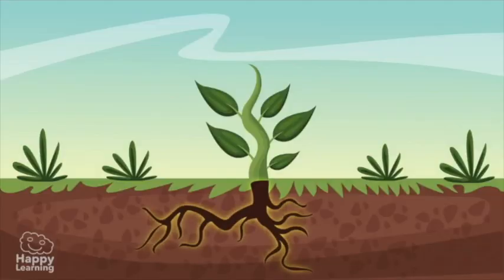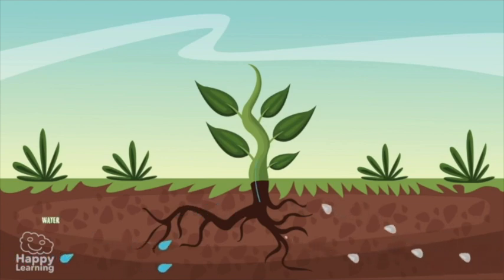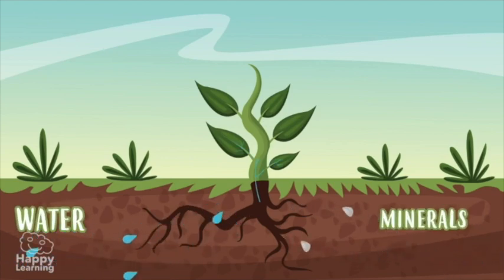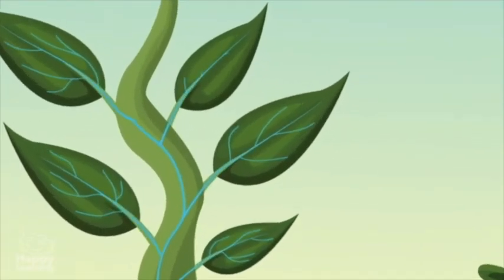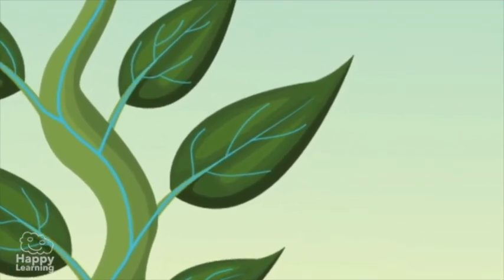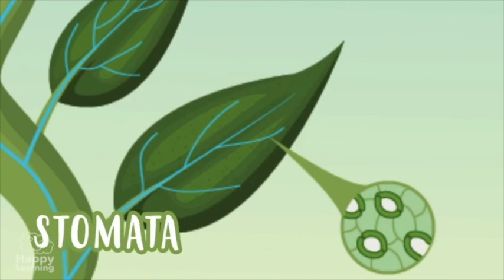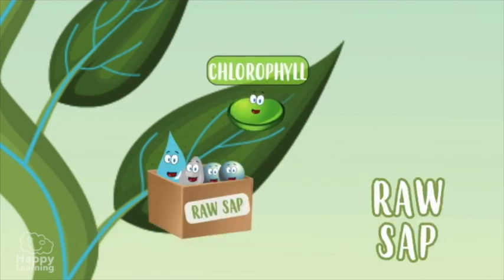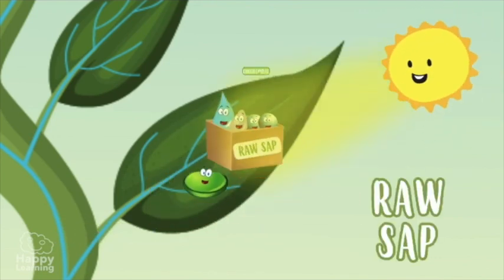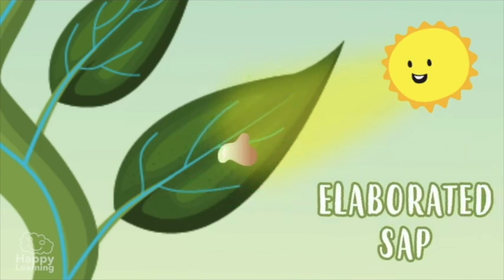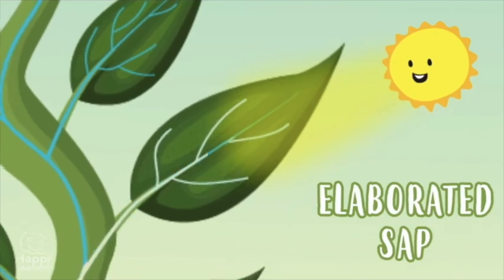With the help of carbon dioxide, water, sunlight, and chlorophyll. Let's think about how photosynthesis occurs inside the plants. The roots are under the soil, and through them, plants absorb water and minerals from the soil. This water and minerals are transported to the leaf through the stem. The leaves have small pores called stomata, which absorb carbon dioxide from the atmosphere. The chlorophyll present in the plant absorbs sunlight.